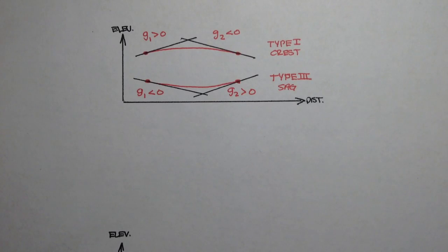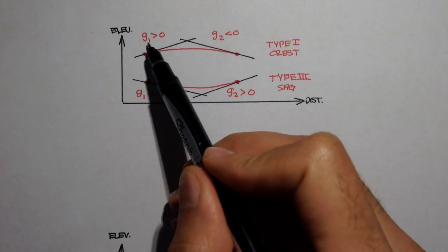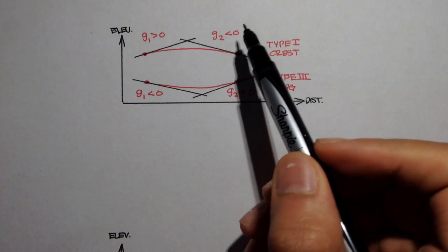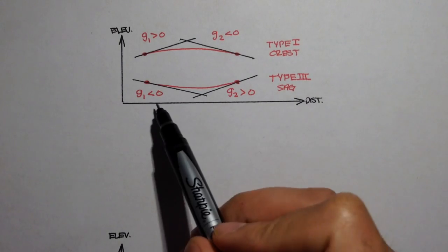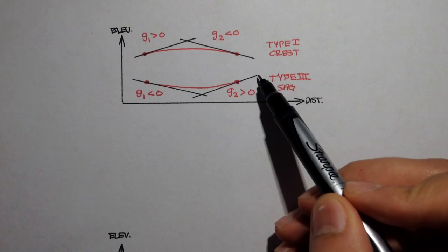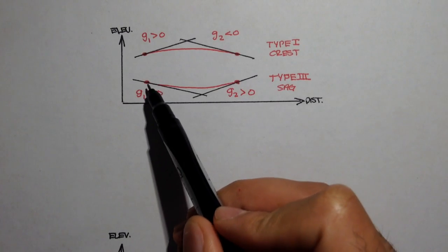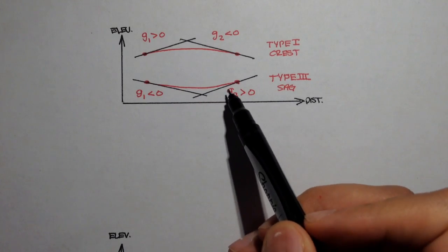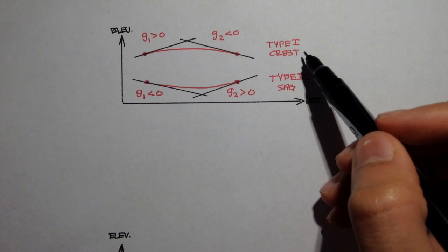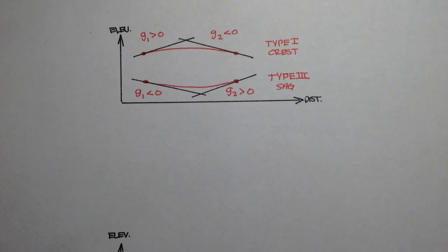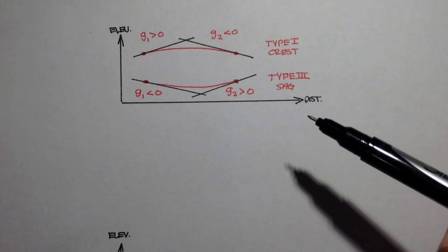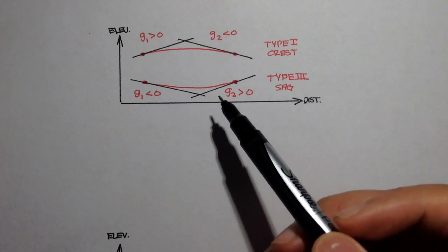Two of the more common types of vertical curves are the type 1 crest curve and the type 3 sag curve. The type 1 crest curve has an entry grade that is positive and an exiting grade that is negative, and the vertical curve is concave down. The type 3 sag curve is where the entering grade is negative and the exiting grade is positive, and that vertical curve is concave up. Type 1 crest curves are sometimes called the sad face curves because the curve is concave down and looks like a sad face, and type 3 sag curves are sometimes called the happy face curves because they look like a smiling face.